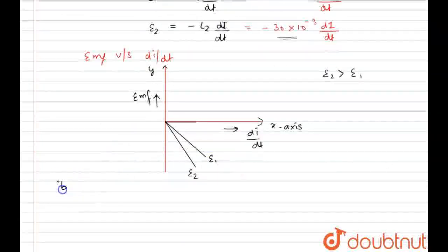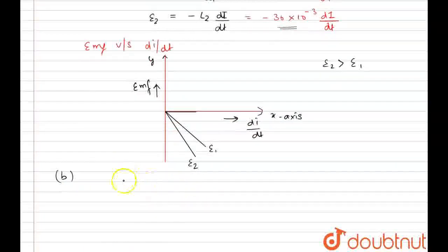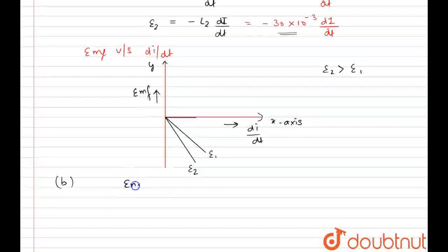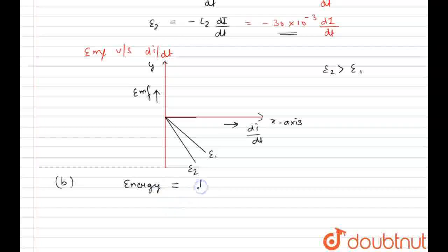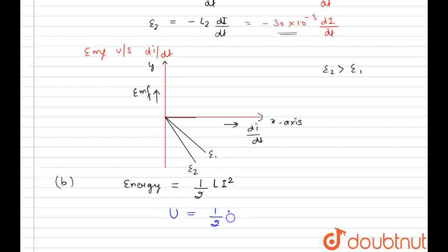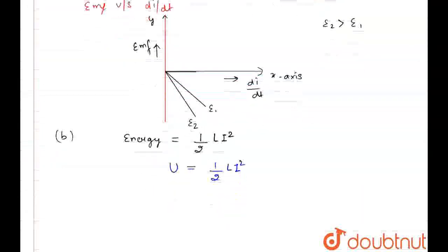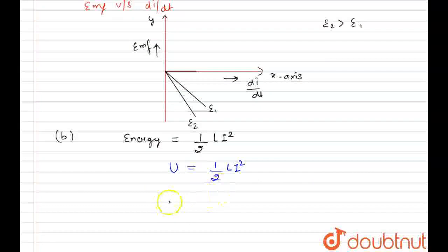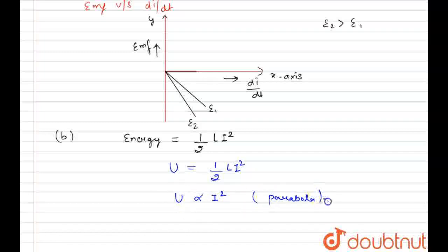Now moving to part B. In part B we have to calculate the energy. The energy stored in an inductor is U = ½LI². From this equation we can state that U is directly proportional to I², and this is the equation of a parabola. So the relationship between energy U and current I is represented by a parabola.